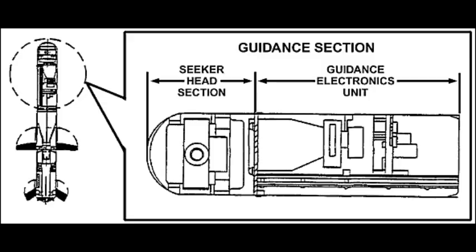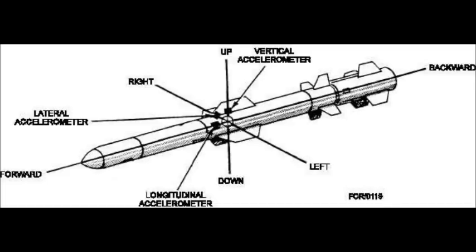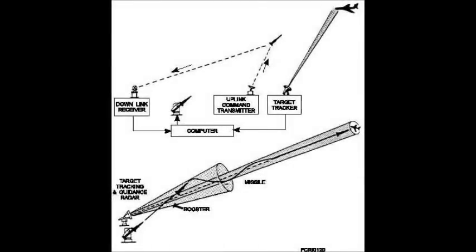The guidance subsystem uses deviations to generate corrective commands to drive the missile from a position where it is to a position where it isn't, and arriving at a position where it wasn't, it now is. Consequently, the position where it is is now the position that it wasn't, and it follows that the position that it was is now the position that it isn't.